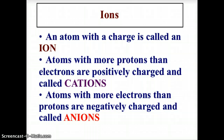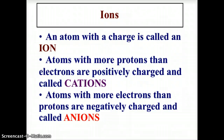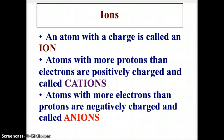An atom with a charge is called an ion. Atoms with more protons than electrons are positively charged and called cations. Remember that we cannot change the number of protons, so it is the electrons that change in number. If an atom gains electrons, thereby having more electrons than protons, it becomes a negatively charged atom, and they are called anions. Anions are negative, cations are positive. A memory tip: AN stands for 'a negative ion' - anions.